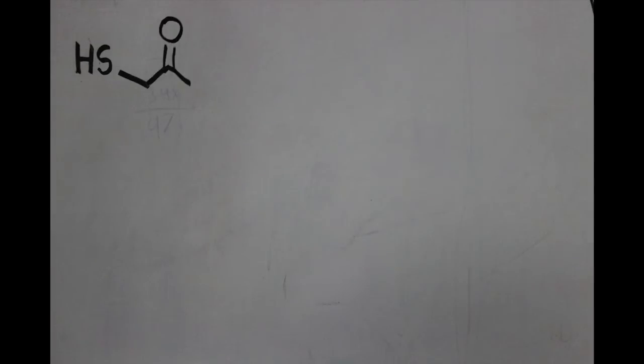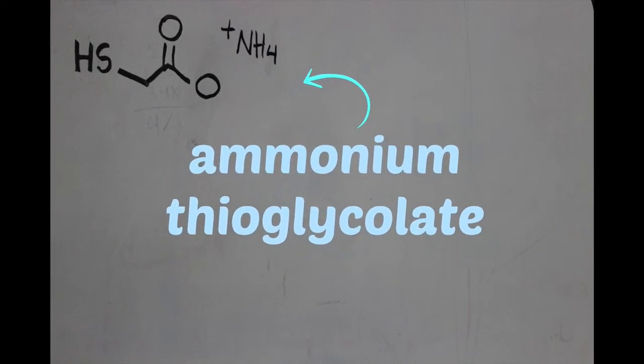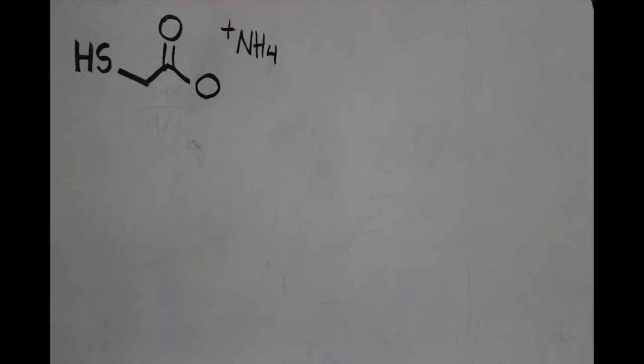This is the chemical formula for ammonium thioglycolate. This chemical is used because it can break disulfide bonds, and with the broken disulfide bonds it weakens the hair and allows you to reform it.